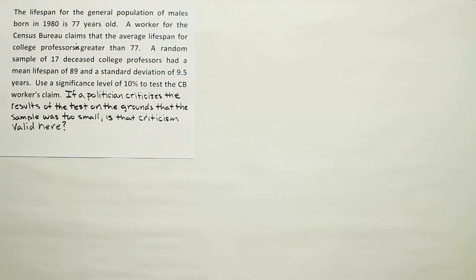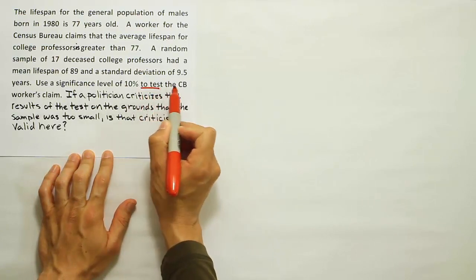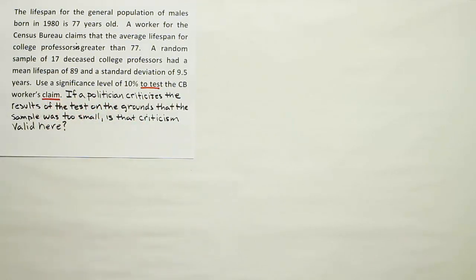Let's work out this problem by first identifying what the key phrase is that tells us what to do. It says here to test the Census Bureau worker's claim. So what we want to do here is conduct a hypothesis test of the Census Bureau worker's claim. Let's identify that claim as our first step.